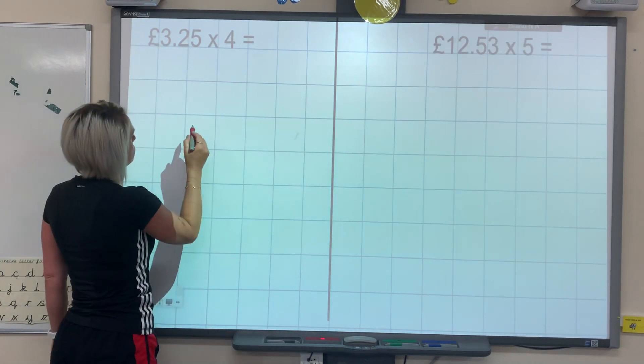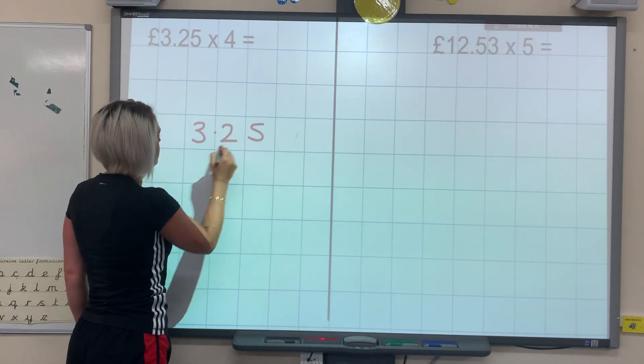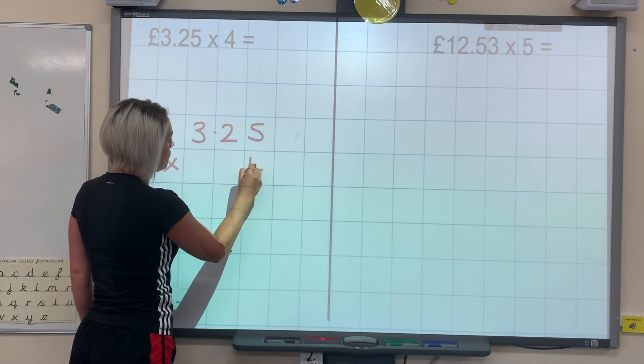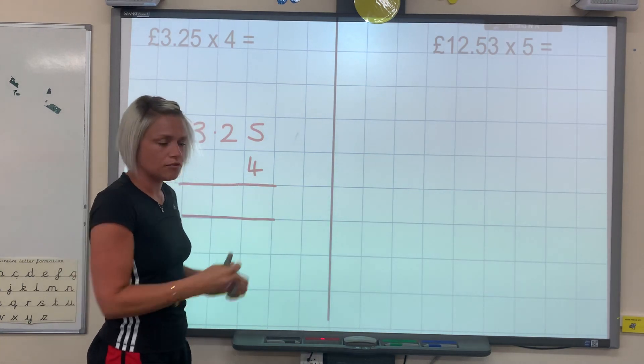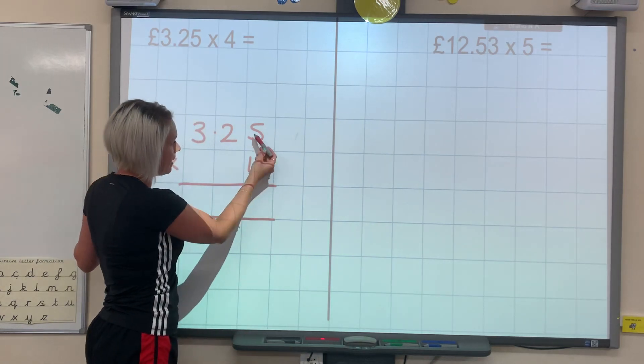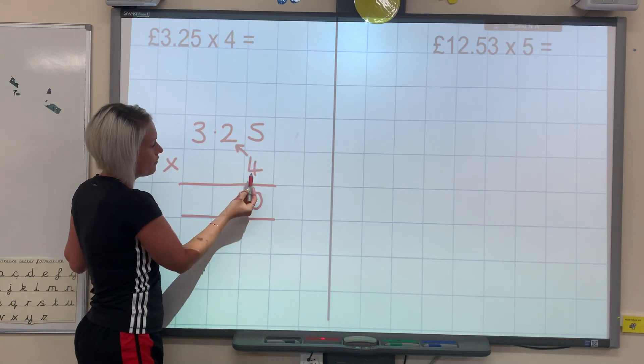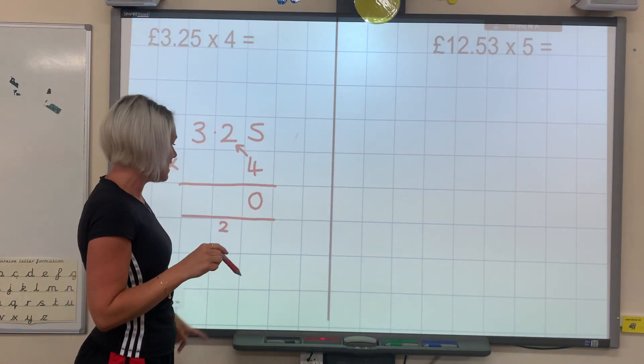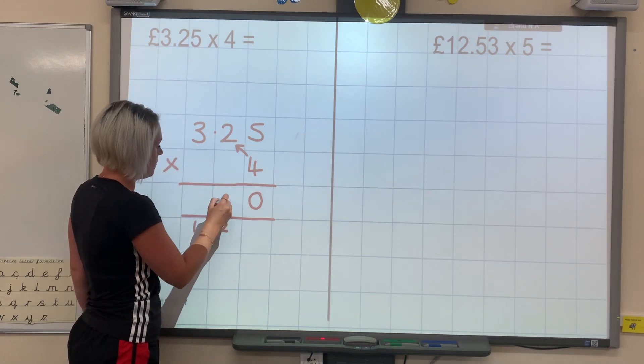Okay, let's look at the next one. So we've got a little bit of a bigger number this time. 3 pound 25 times 4. So exactly the same. We've just got to times 5 another digit this time. So 5 times 4 is 20. Then I go this way. 4 times 2 is 8. Add 2 is 10. Carry my 1.